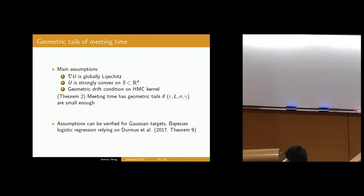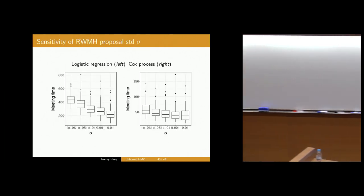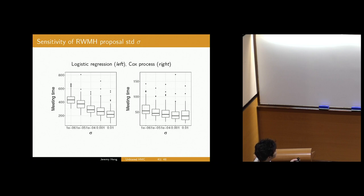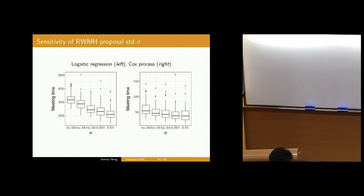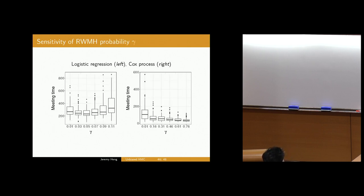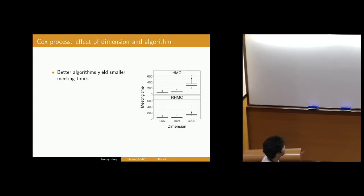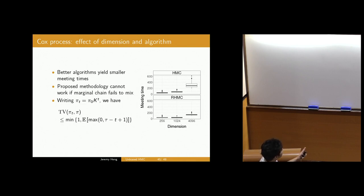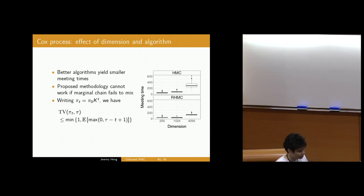We relied a lot on results in a recent paper by Dalalyan, Moulines, and Eberle. Some plots show that the meeting time is not very sensitive to the choice of sigma — varying sigma by several orders of magnitude, the meeting time seems quite stable — and the same message holds for gamma, which controls the probability of picking coupled Random Walk Metropolis-Hastings. One important point: our proposed methodology does not work if the marginal chain does not mix.